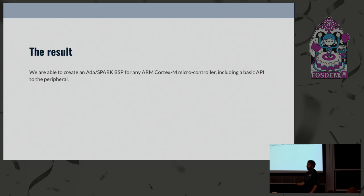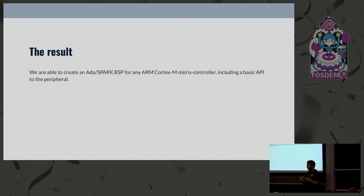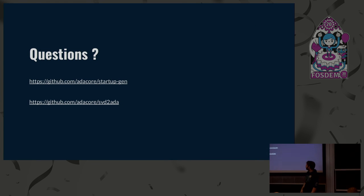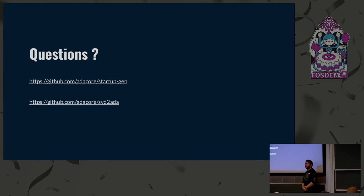This is the result we have: we can basically generate Ada Spark hardware bindings — a BSP — for any microcontroller we have in our CMSIS-Packs database, and it also includes how to boot the board with the CRT0 and the linker script. Thank you for your attention. Do you have any questions?